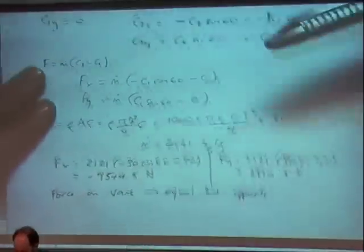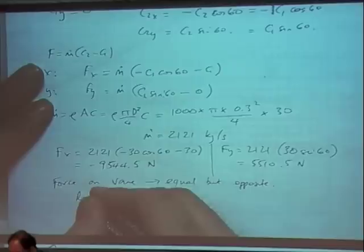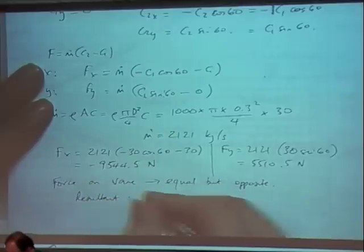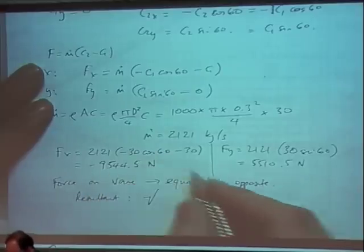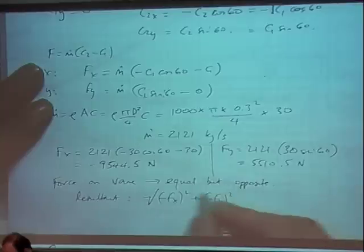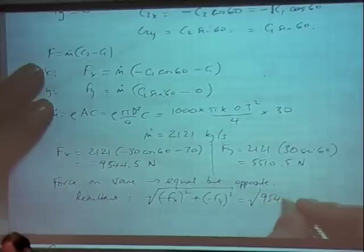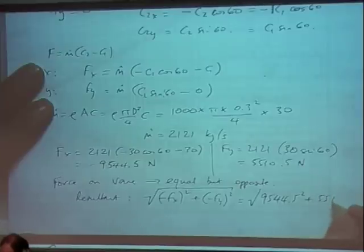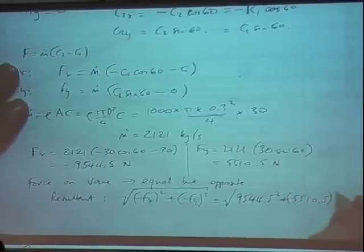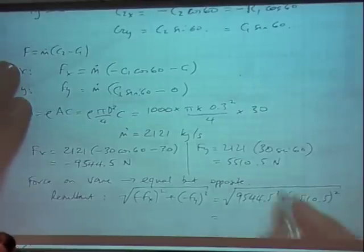And it wants the resultant force on the vane, not in the x to y direction. They're just going to be the equal and opposite, but the resultant, that's the square root of minus fx squared plus minus fy squared, all square rooted. So if you do the sums, you get 110.2 newtons.